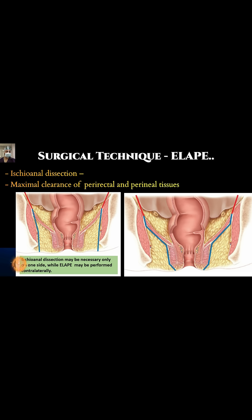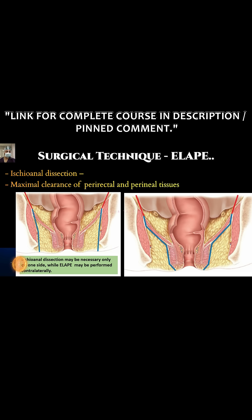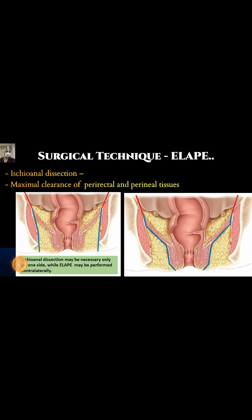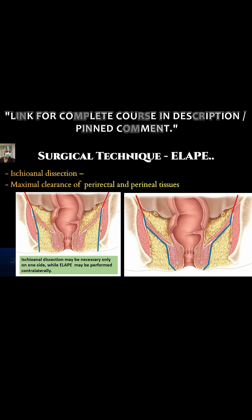In the ELAPE, we are coming along the outer surface of the levators and the external sphincter. But in the case of ischioanal dissection, we are taking out this whole pad of fat, and this will be the largest defect in the perineum, requiring closure with some kind of prosthesis. If there are other possibilities — like doing ELAPE on one side and ischioanal dissection on the other side — this can be done if it is involving only one side, to reduce the defect size.